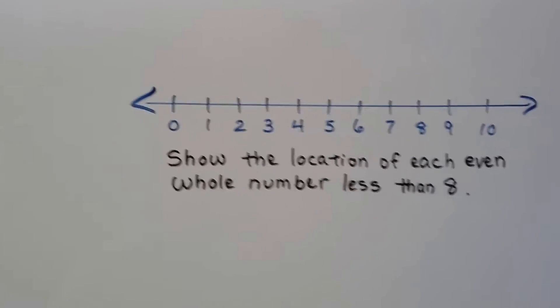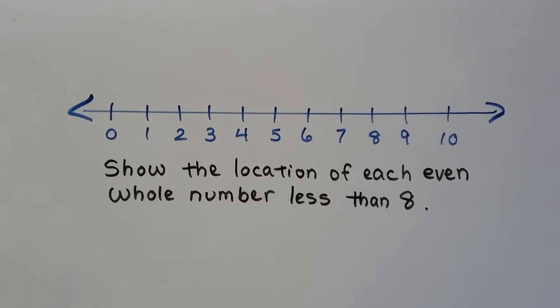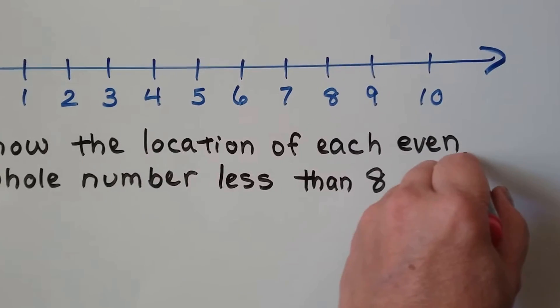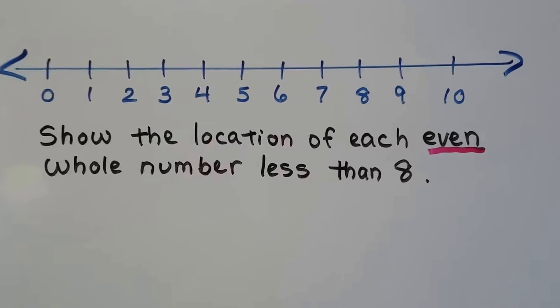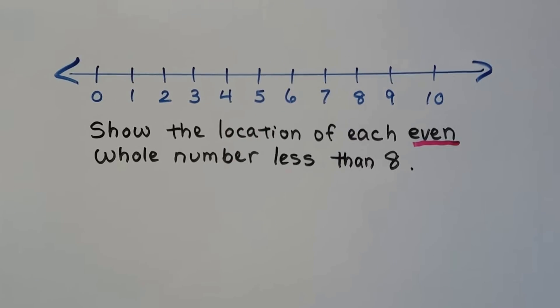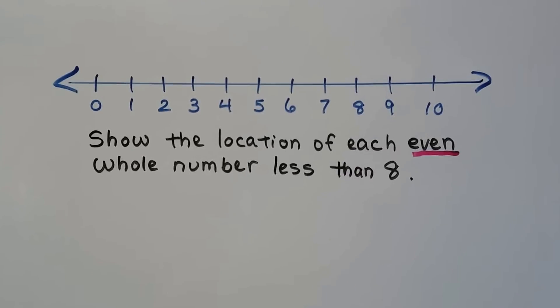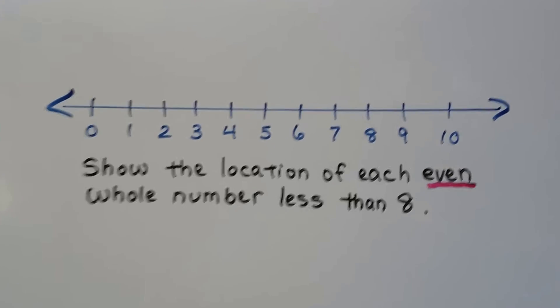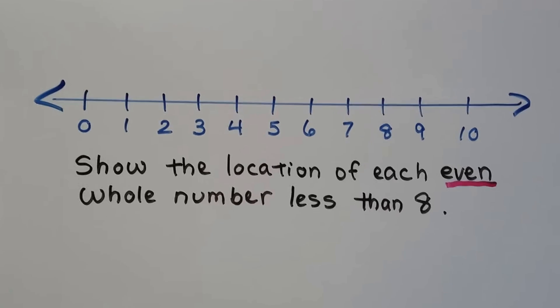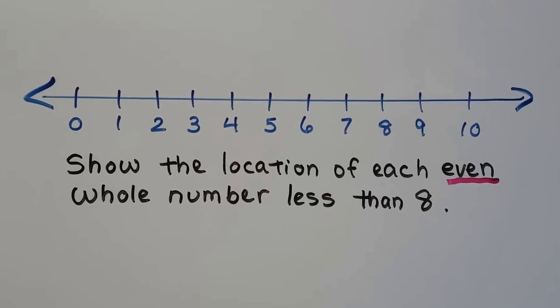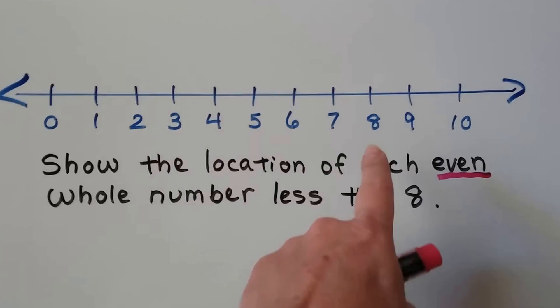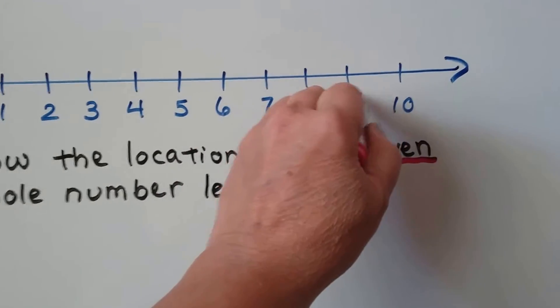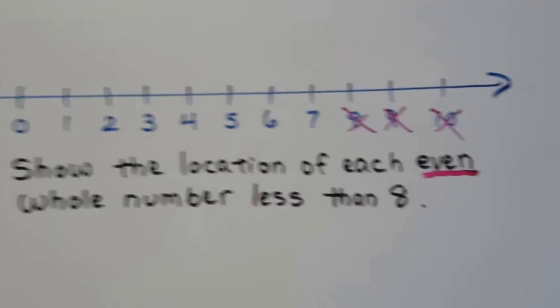This one says show the location of each even whole number less than 8. So we need to find an even number. There's going to be a link in this video's description about even and odd numbers if you need a review or some help with that. So we need to show the location of each even whole number that is less than 8. So that means if it's less than 8, then 8's not included. So 8, 9, 10 are not included, are they?